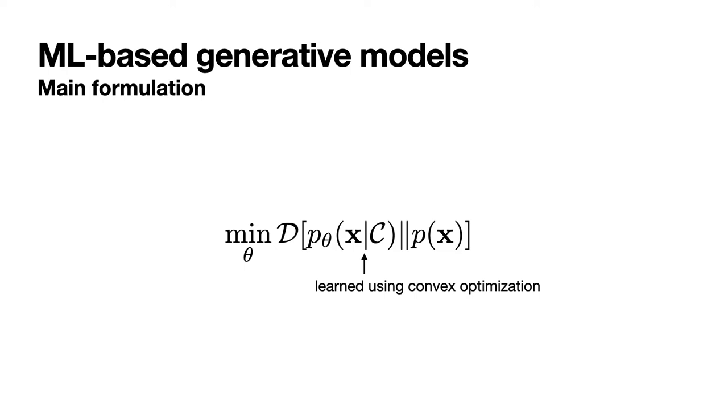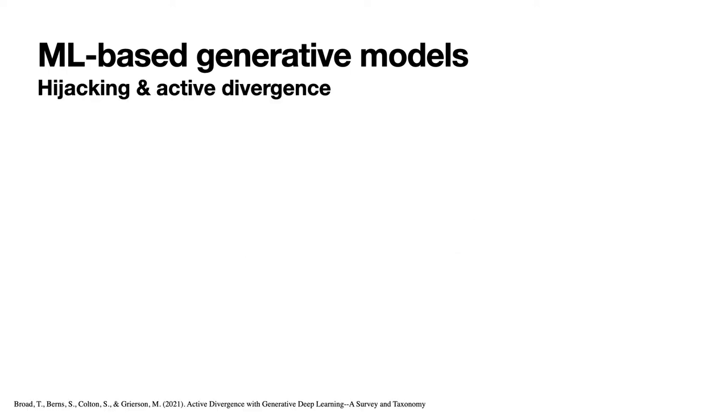While the minimization of this divergence is very effective to teach the model how to reproduce the data, it naturally hinders the model to generate content that is not present in the original distribution. Such limitations have motivated artists, mostly in the image domain, to search ways of hijacking models in order to enforce the generation of novel content.